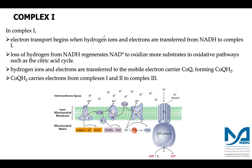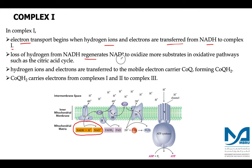Now we look at the individual complexes in detail, starting with complex 1. In complex 1, electron transport begins when hydrogen ions and electrons are transferred from NADH to complex 1. In the process, NADH is regenerated to NAD+, and NAD+ then participates in oxidizing more substrates in oxidative pathways, especially the citric acid cycle.